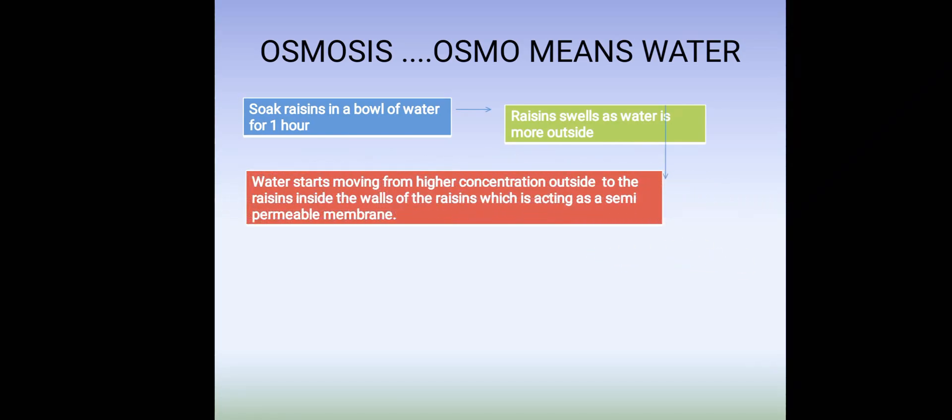Water starts moving from higher concentration, that is outside, to the raisins inside. The walls of the raisins act as a semi-permeable membrane.